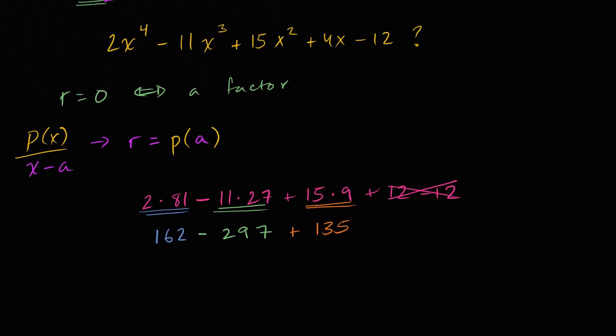And let's see, if I were to take 162 and 135, that's going to give me 297, minus 297. Let me do that green color, minus 297, and we do indeed equal zero.